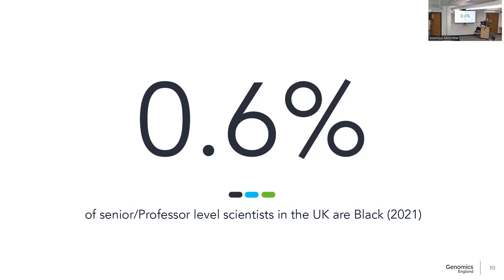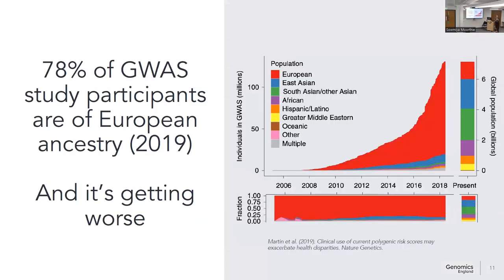The reason I wanted to give you that framing is that when we're thinking about inequalities in data, the data matters — but we also need to think about the environment in which that data is collected. If you've ever seen a talk about genomics and inequalities, this is kind of the canonical slide: the number of individuals in GWAS studies of European ancestry sits at approximately 80%, and this proportion is massively increasing.